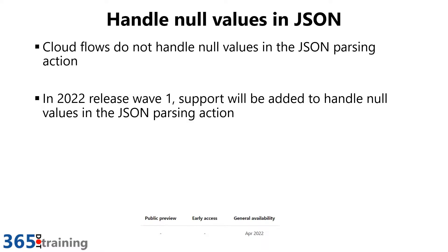Another Power Automate one with the Parse JSON action: how many times have you run into a situation where you're doing some integration, got data from another system, used Parse JSON to parse it, and then failed because some of the data had a null in it? This particularly comes into play when you've generated a schema and the schema expects a valid data type that doesn't include null. In Wave 1, they'll be supporting a better ability to handle null in the Parse JSON action, coming to general availability in April 2022.